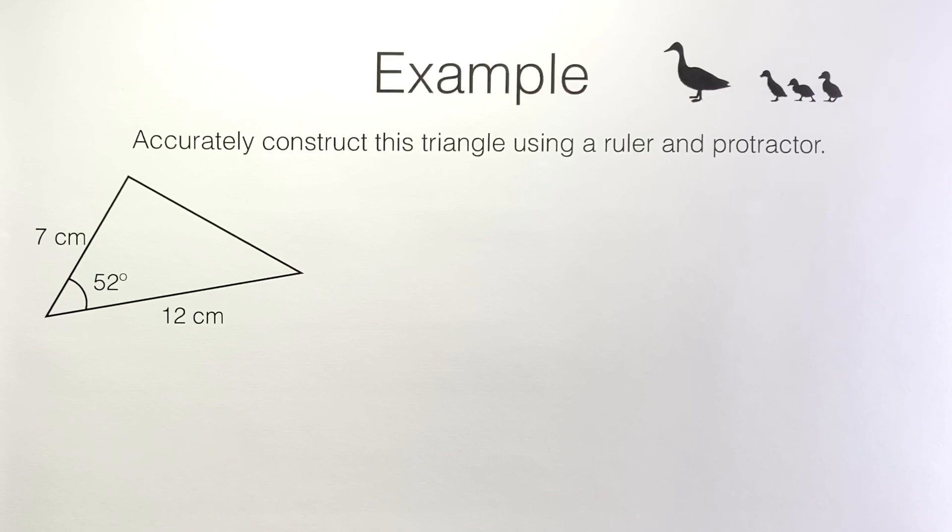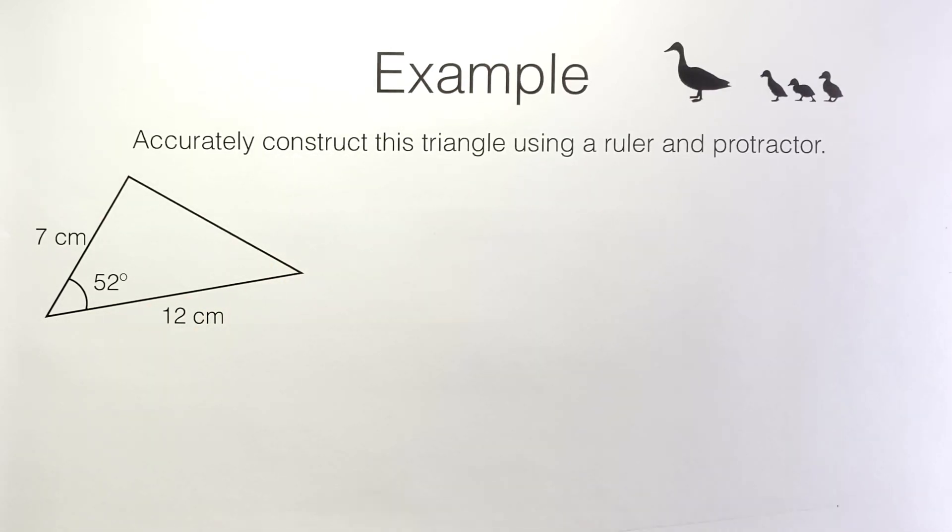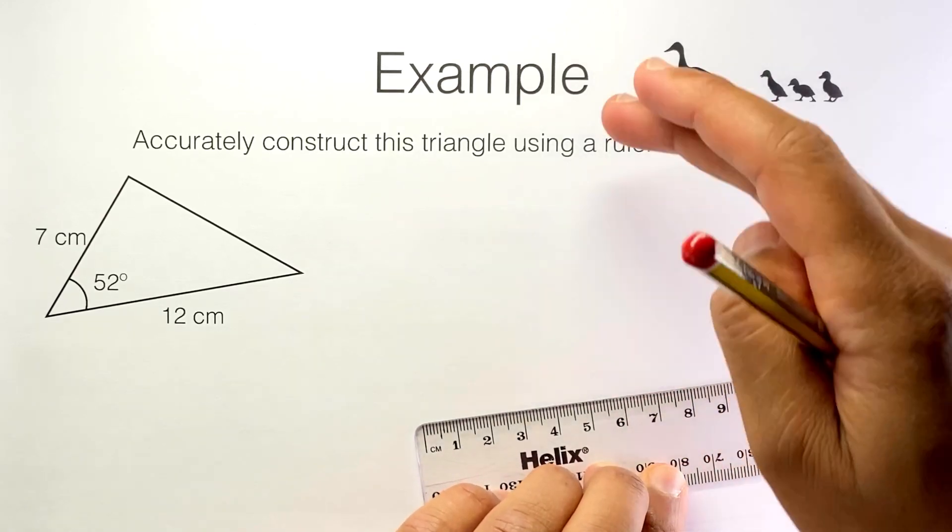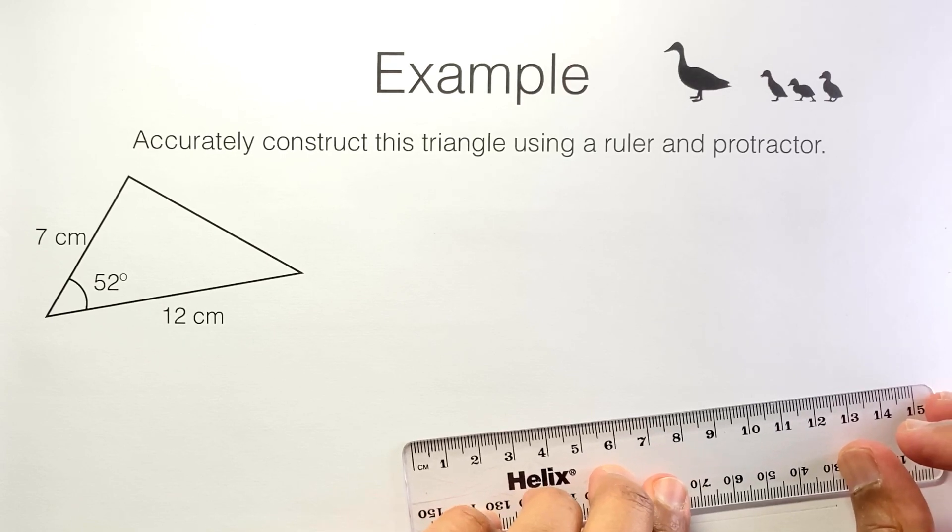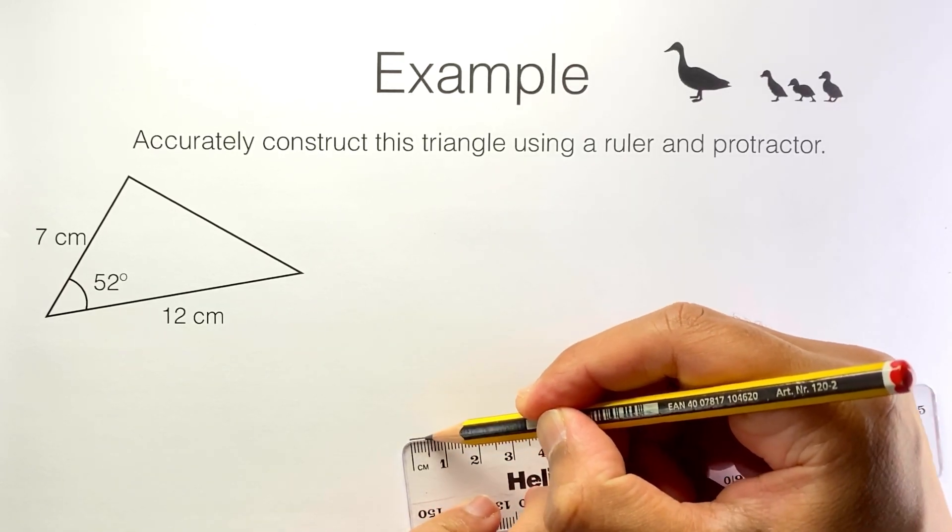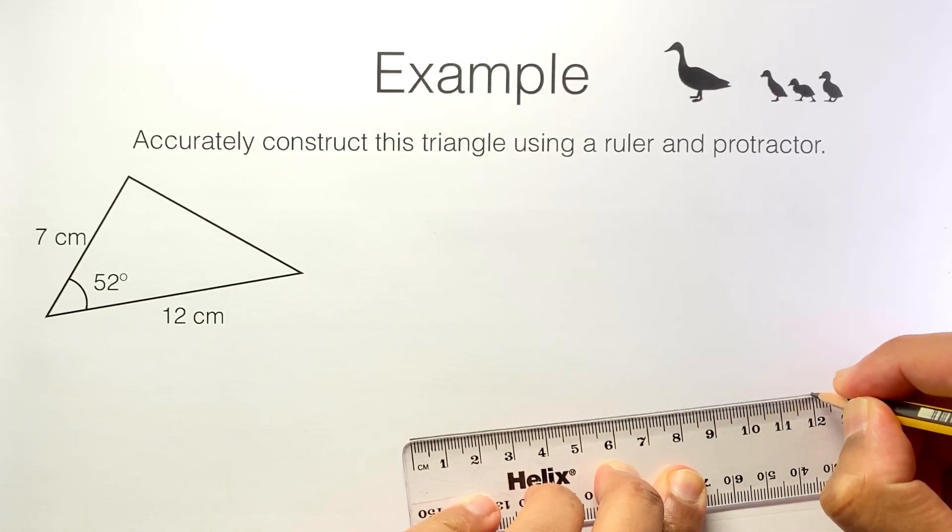I like to start with the longest given side. You don't have to start with this but I'm going to start with the 12 centimetre side. So here I position my ruler. I make sure I leave plenty of space above and draw out a side that is 12 centimetres long. So starting from there all the way up to 12 which is right there.